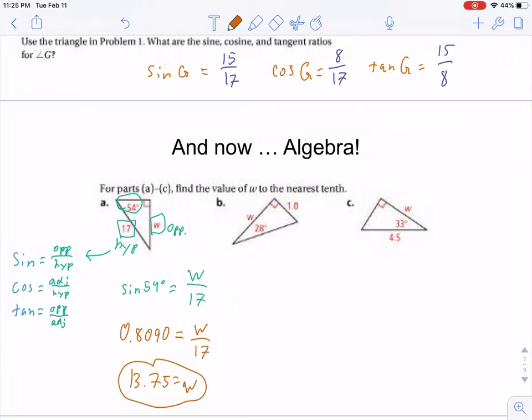How about these other ones? What trigonometric ratios should we use for b and c? Did you figure them out? This one will be cosine, whereas this will be tangent.